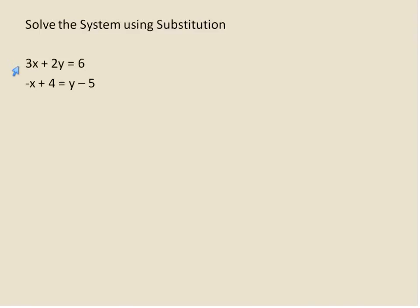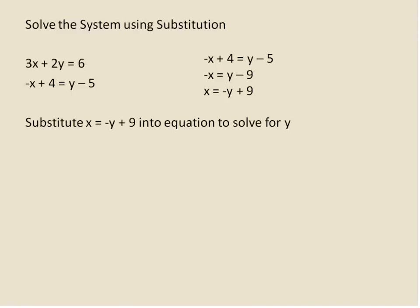We're asked to solve this system using substitution. This one is one step more complicated because we're not given any equation where x or y is already by itself. So I'm going to take the second equation and rearrange it so that I get x by itself. To do that, I subtract 4 from both sides, then multiply both sides by negative 1 to get positive x by itself. So x is equal to negative y plus 9. Now I have to substitute that into the other equation for the value of x, so I can solve for y.